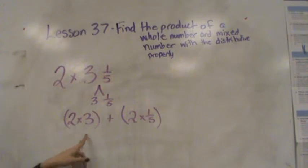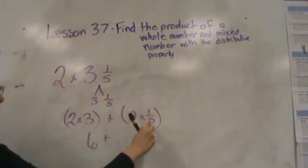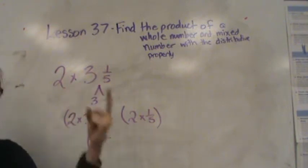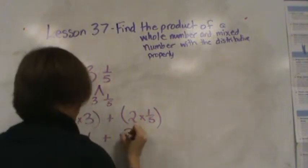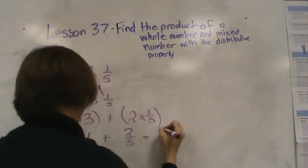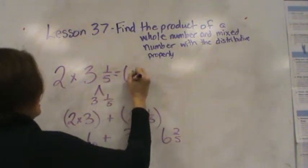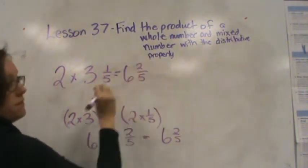2 times 3 is 6 plus 2 times 1 fifth. If I did 1 fifth and 1 fifth, that'd give me 2 fifths. So all together, I would have 6 and 2 fifths. So 2 times 3 and 1 fifth is 6 and 2 fifths.